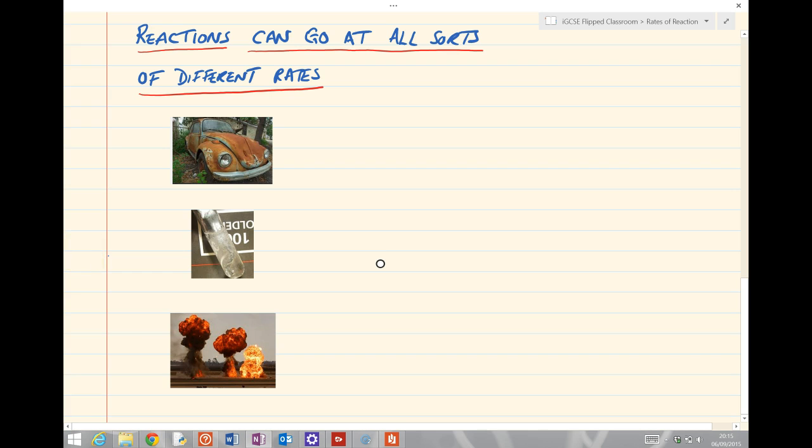So reactions can go at all sorts of different rates. For example, firstly we could have very slow reactions, an example could be iron rusting, where iron reacts with oxygen and water.